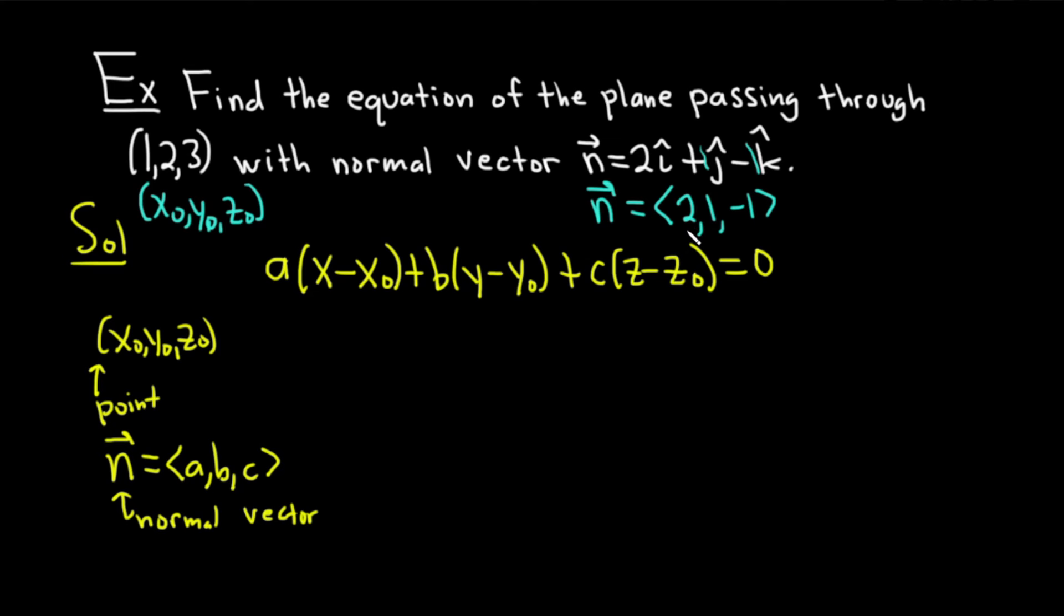So our a here, just to be really clear, is 2. Our b is 1. And our c is -1, right? Because our normal vector is abc. It's going to be 2 parentheses, right? That's our a. And then x - x₀, which is 1.